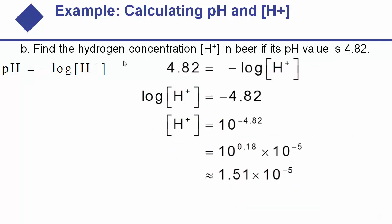In this next example we use the same formula but work in the other direction: we want to find the hydrogen ion concentration in beer if its pH value is 4.82. We are given pH, plug it in for pH, and need to solve for hydrogen. Since hydrogen is trapped inside the log function, we undo the log by raising 10 to both sides — since the log is base 10 — and those cancel, giving hydrogen on the left and 10 to the negative 4.82 on the right.